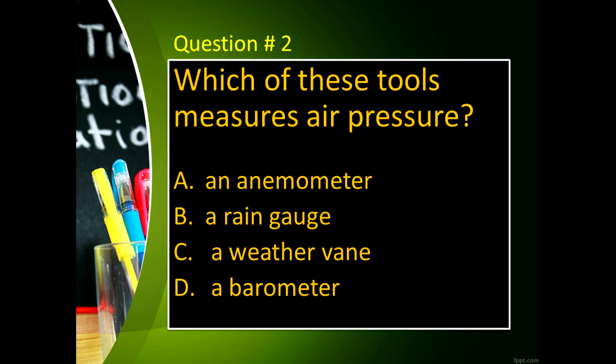Question number 2: Which of these tools measures air pressure? Letter A, a manometer. Letter B, anemometer. Letter C, water gauge. And letter D, barometer.